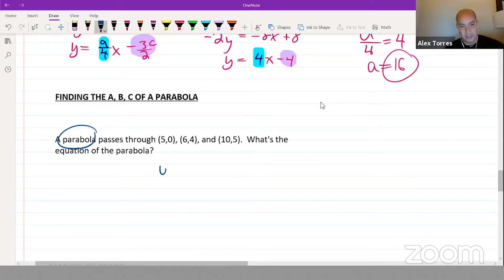So we know it's a parabola. A parabola is going to be in the format of y equals ax squared plus bx plus c. And if it passes through the point (5,0), that's our easiest point. If you plug in zero for y and five for x, then you get zero equals 25a plus 5b plus c.